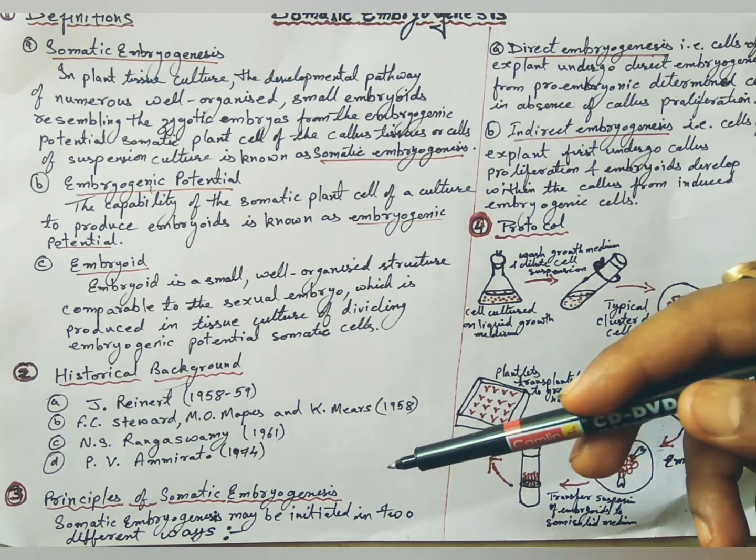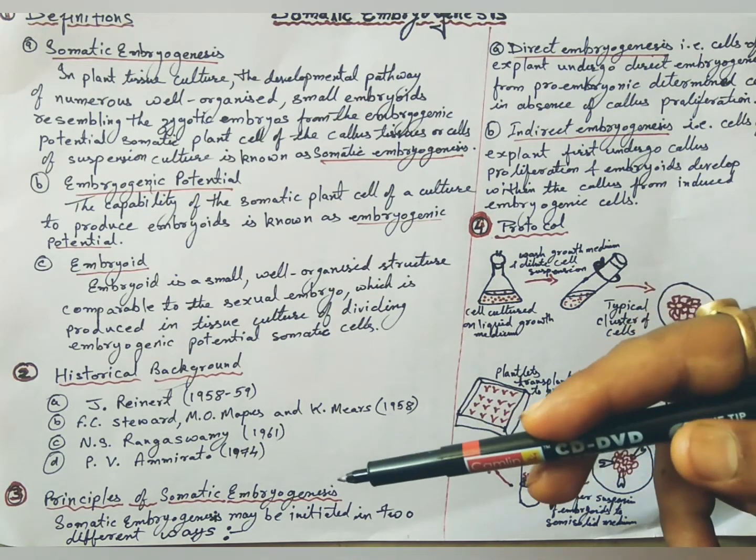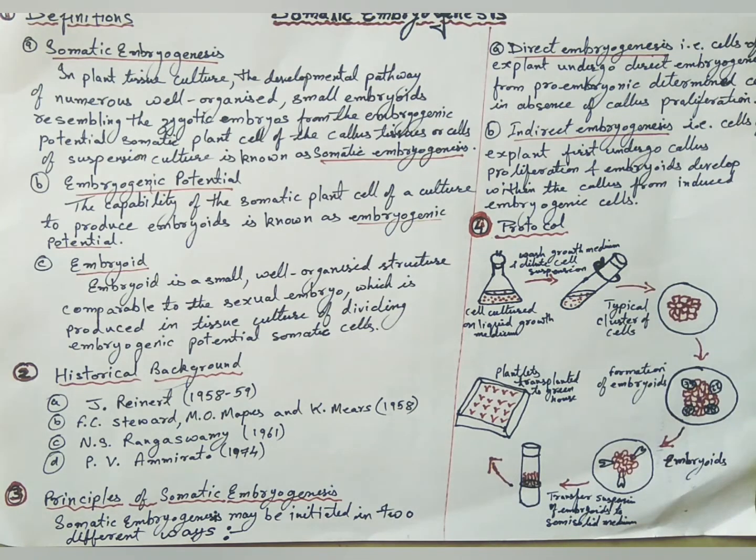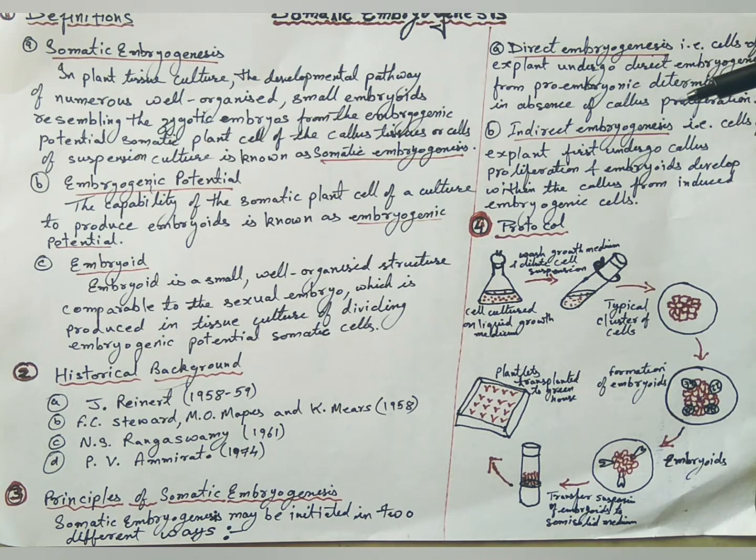Principle of somatic embryogenesis: Somatic embryogenesis may be initiated in two different ways. First is direct embryogenesis. In some cultures, somatic embryogenesis occurs directly in the absence of any callus production from pro-embryogenic determined cells that are already programmed for embryo differentiation. For instance, somatic embryos have been developed directly from leaf mesophyll cells of orchard grass without an intervening callus tissue.